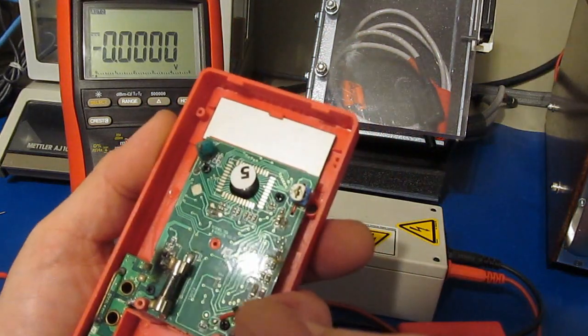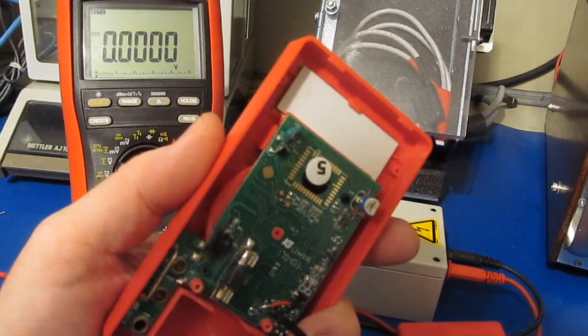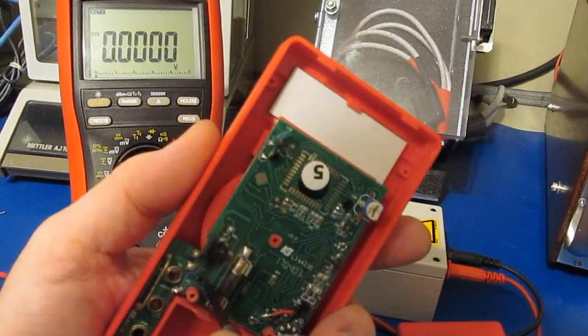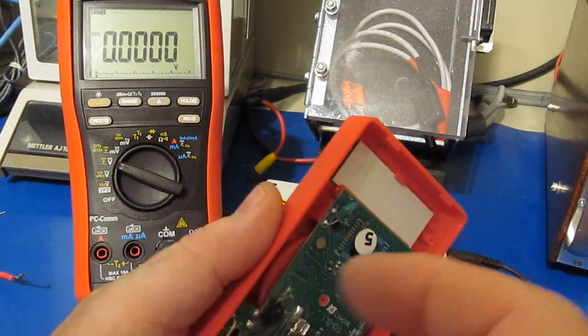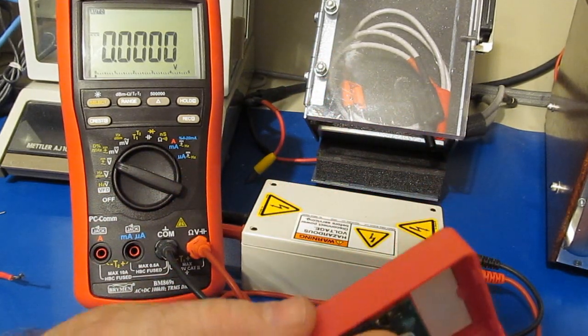So this is the last Harbor Freight meter that we ran. Again, this is the same meter that I put through all the life cycle testing. It's also the same meter that I eventually damaged with my new ESD gun.